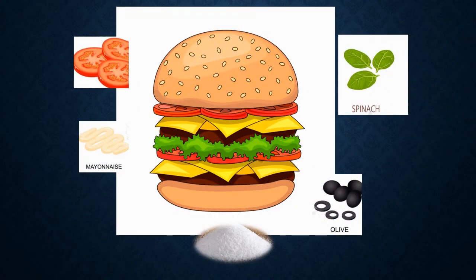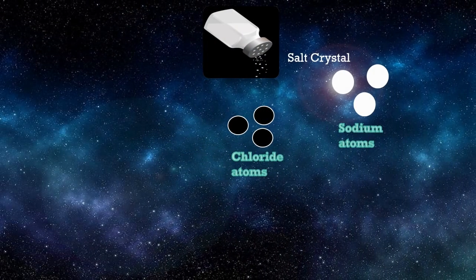To make a burger we use different ingredients, and these ingredients combine to form a burger. Similarly, we can say that each ingredient represents an element and the burger represents a molecule. Matter itself is a combination of different atoms. For example, a salt crystal is made up of two atoms — sodium (Na) and chloride (Cl) — which together form a salt crystal.